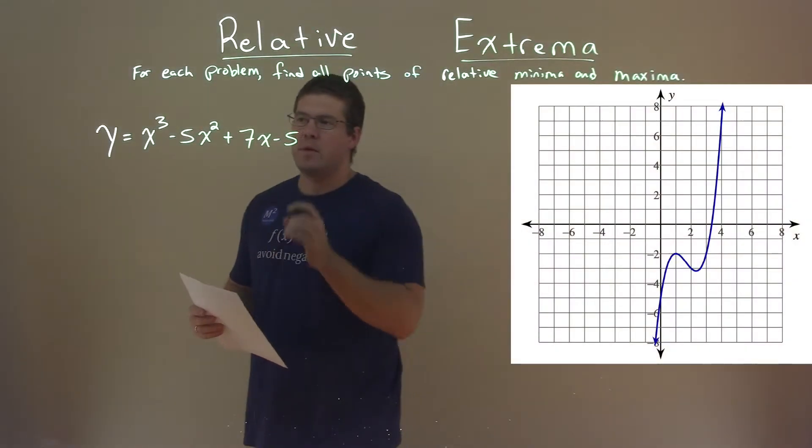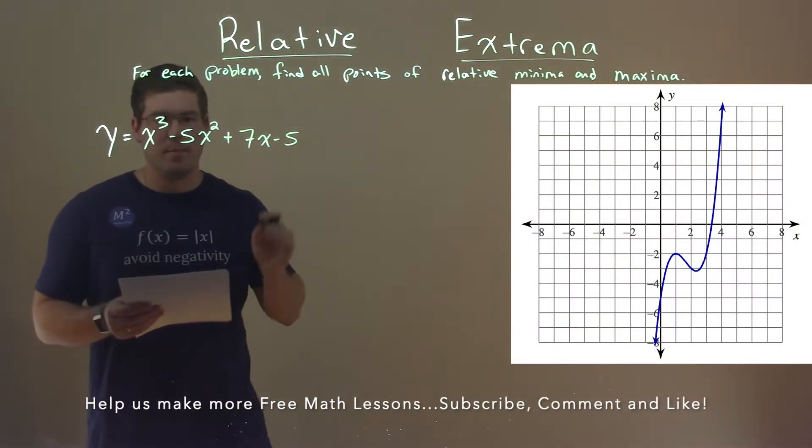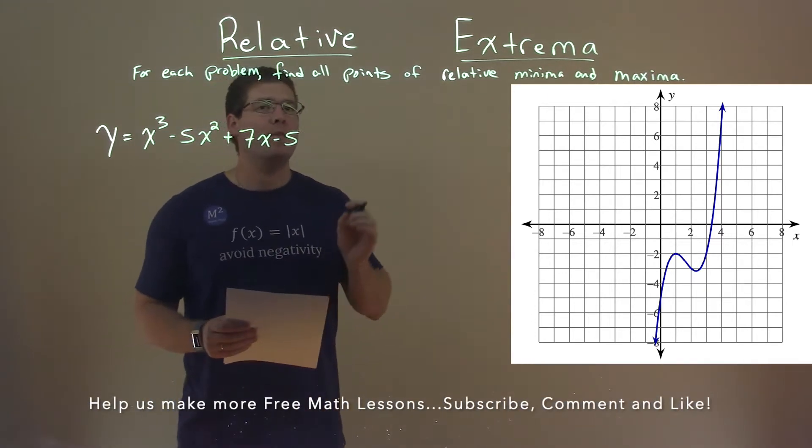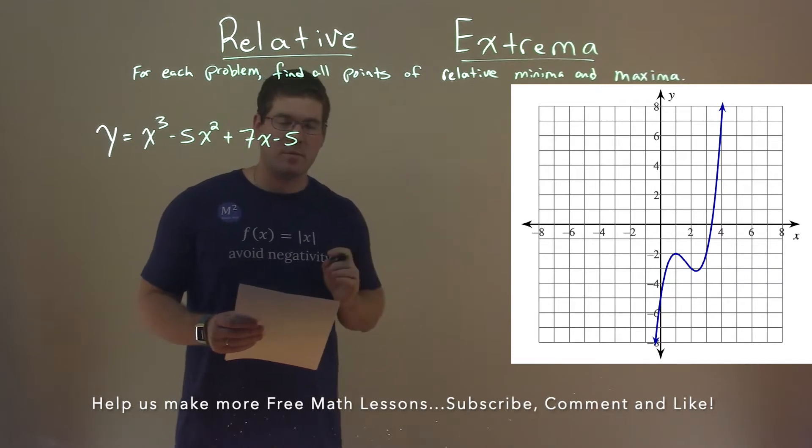We're given this problem right here: y equals x to the third power minus 5x squared plus 7x minus 5, and we have to find all the points of relative minima and maxima.